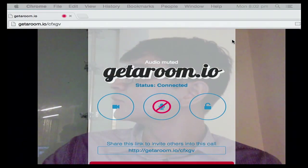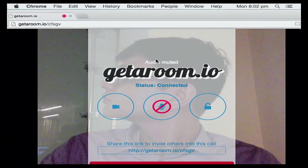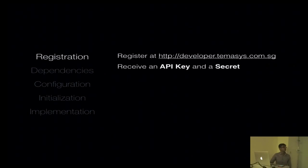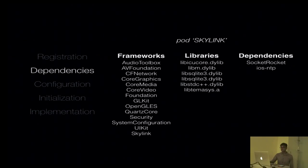Okay, so that's the demo. Now I'll be showing you how you can make an app like that with just these five simple steps. The first is registration — you have to go to developer.temasis.com.sg, get yourself an API key and a secret. This will be if you want to use the SDK in your mobile app. If you're looking for a web app, you'll need to provide additional details like the application domain and so on. Next, you'll be adding the dependencies, frameworks, and libraries. If you use CocoaPods, it's just simple — just add the Skylink pod to your project. If not, you'll have to add the following frameworks, libraries, and dependencies.